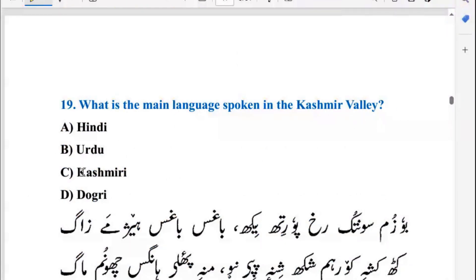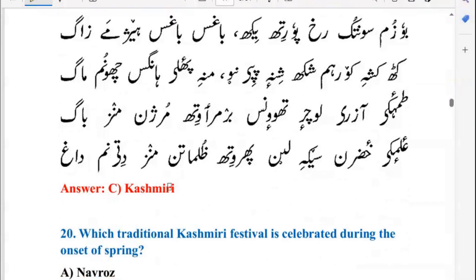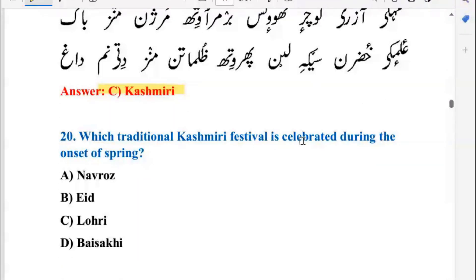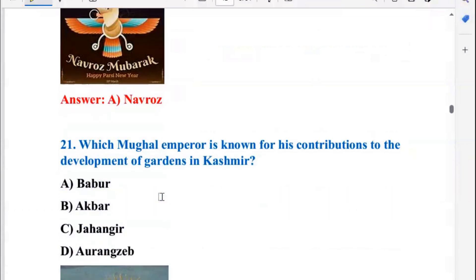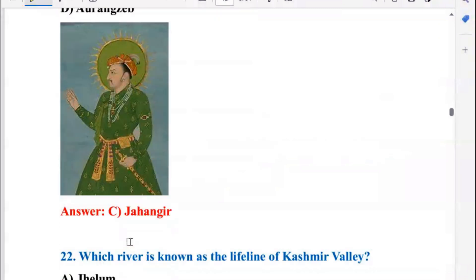What is the main language spoken in the Kashmir Valley? The most popular language is Kashmiri, so the right option is C. Next, which traditional Kashmiri festival is celebrated during the onset of spring? That is Navroz. Which Mughal emperor is known for his contributions to the development of gardens in Kashmir? That is Emperor Jahangir, who was originally Shahzada Salim and later took the name Jahangir.